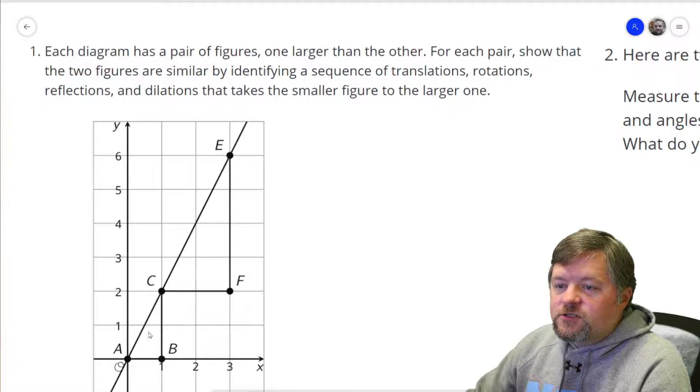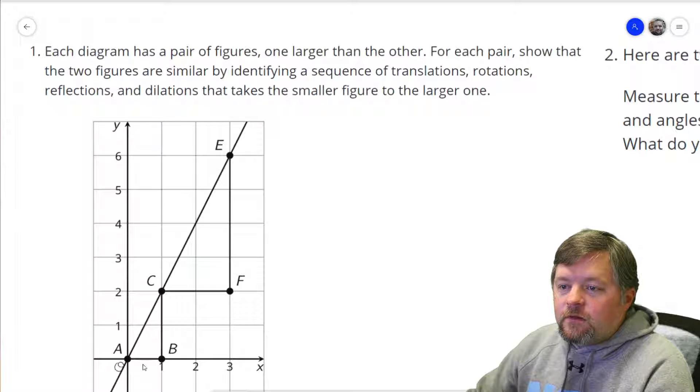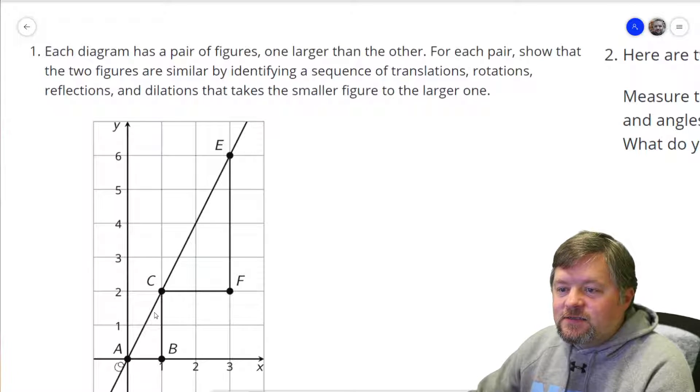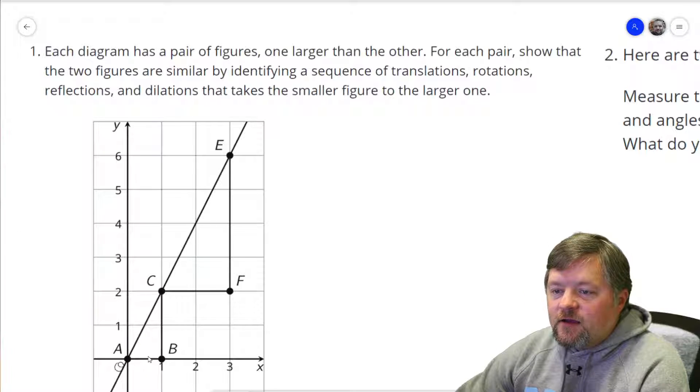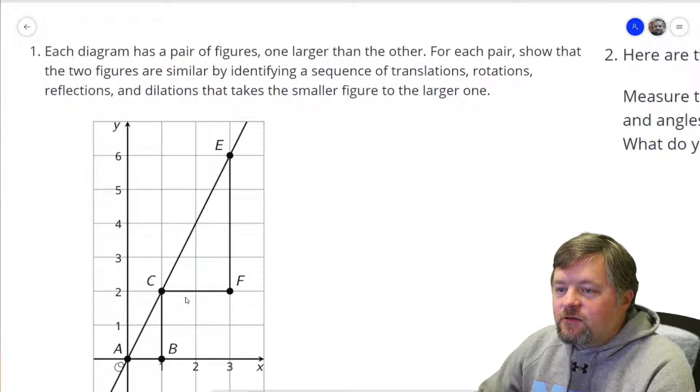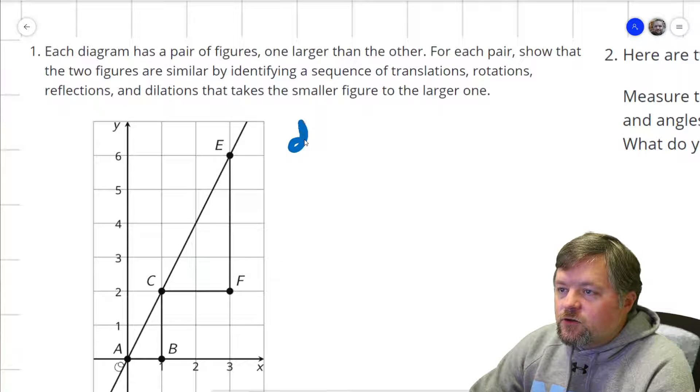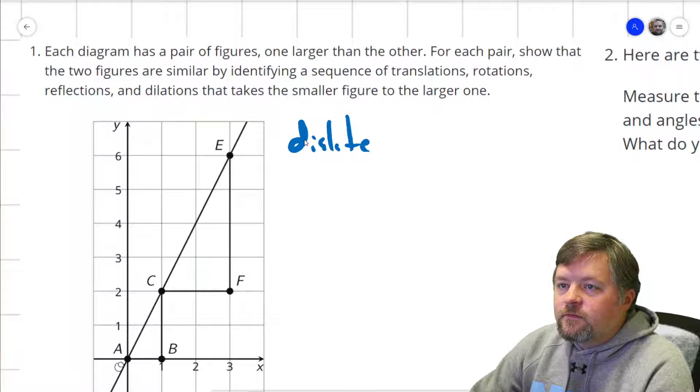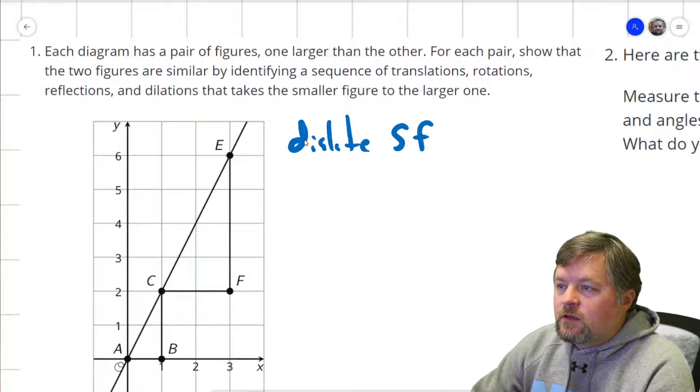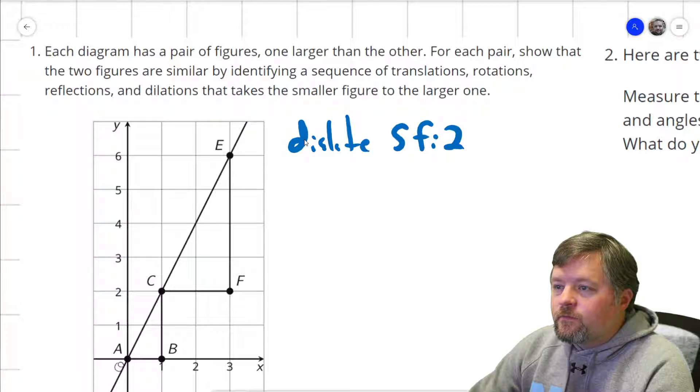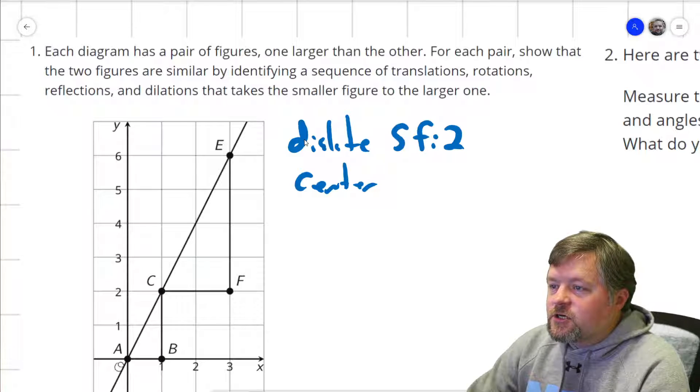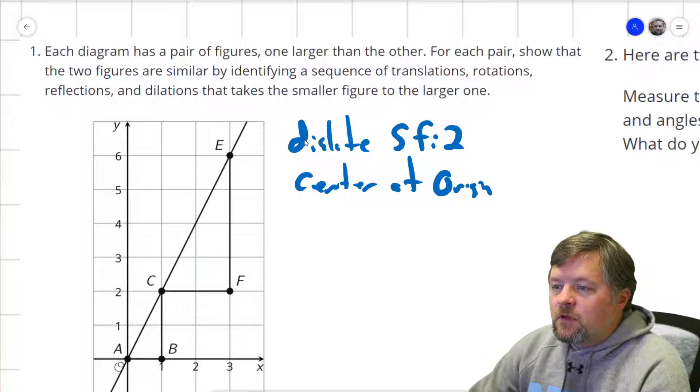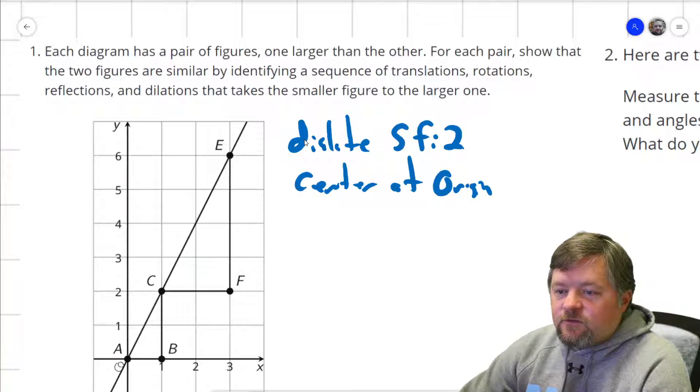So I look at these and my first thought is, what are we going to do to get them the same size? Well, what would the scale factor be from one to the other? The base of this triangle has a length of one, and the base of the other one has a length of two. So that looks like a scale factor of two. So we want to dilate, scale factor of two, centered at the origin.